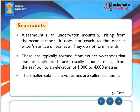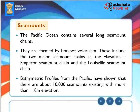Sea Mounds: A sea mound is an underwater mountain rising from the ocean's sea floor that does not reach sea level and does not form islands. They are typically formed from extinct volcanoes that rise abruptly from the sea floor to an elevation of 1,000 to 4,000 meters. Smaller submarine volcanoes are called sea knolls. The Pacific Ocean contains several long sea mound chains formed by hotspot volcanism, including the Hawaiian Emperor Sea Mound Chain and the Louisville Sea Mound Chain. Bathymetric profiles from the Pacific have shown there are about 10,000 sea mounds with more than 1 km of elevation.